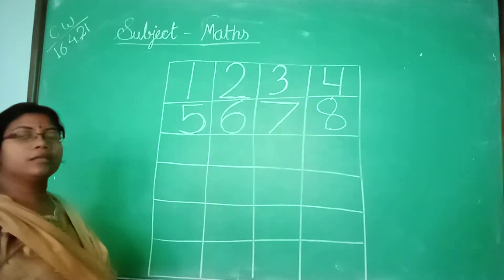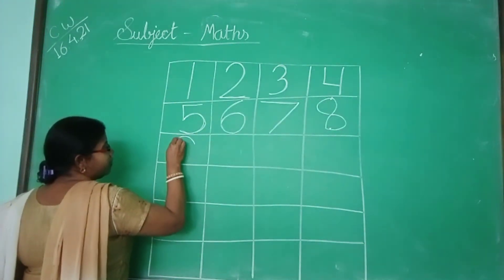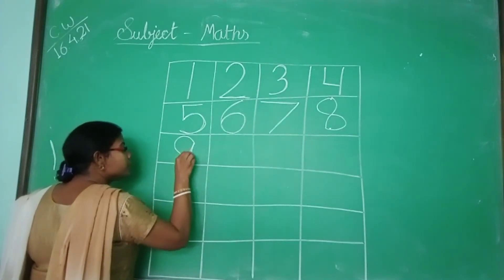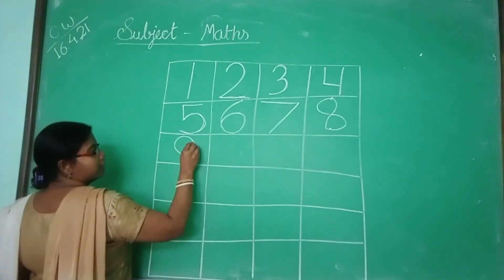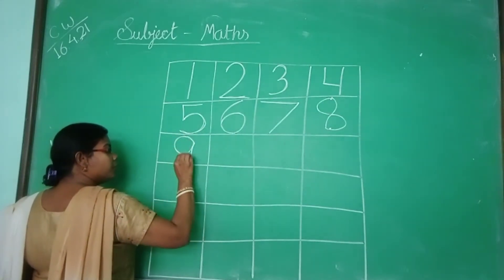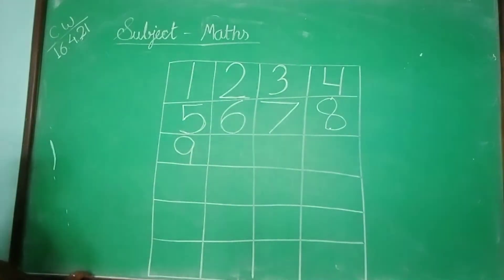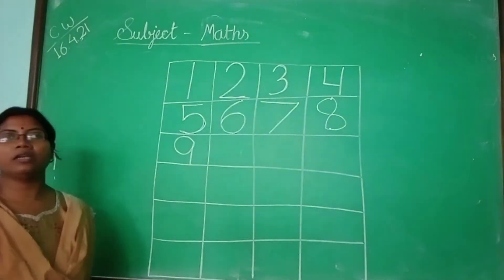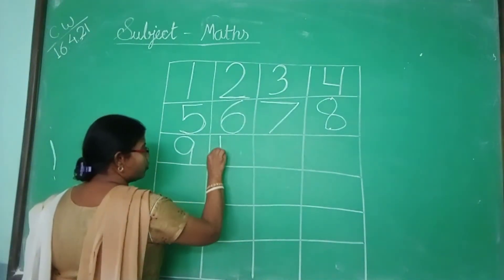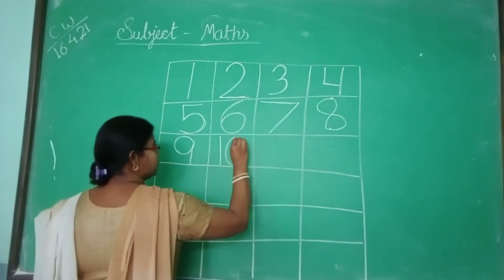Then number 9. Flower curve, make it join, it becomes a circle — that is number 9. Then number 10: write 1, then 0 — that's 10.